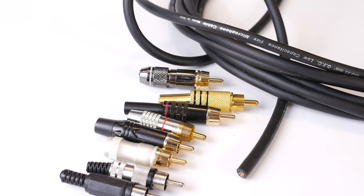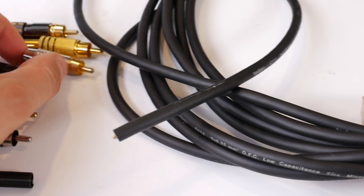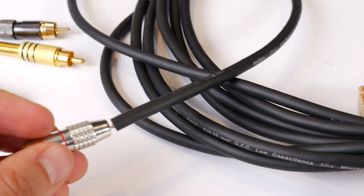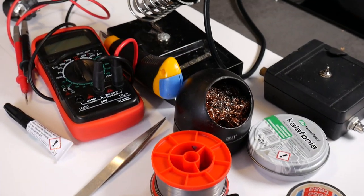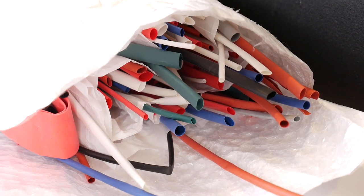You'll also need RCA connectors that can be put on the shielded cable. RCA connectors cost from a few dollars to tens of dollars per pair. You'll also need some tools: a soldering iron and some heat shrink tubing.